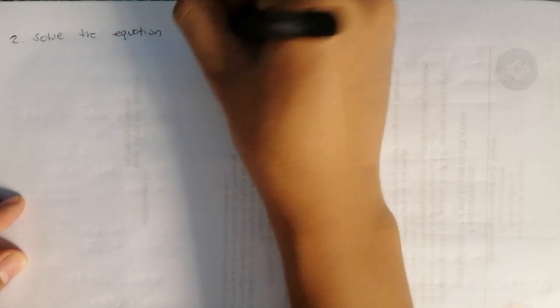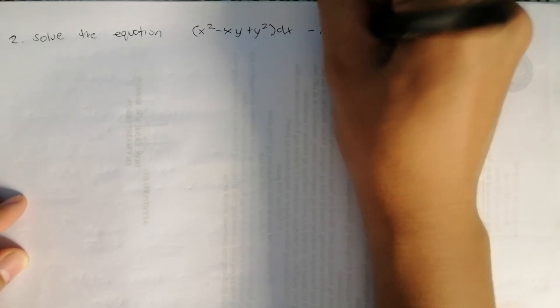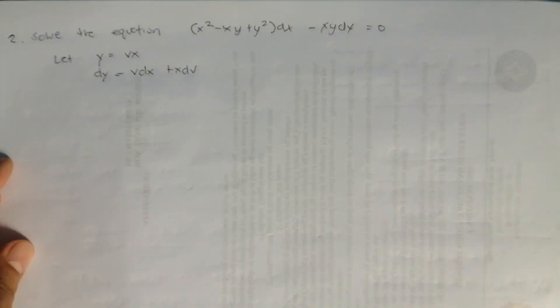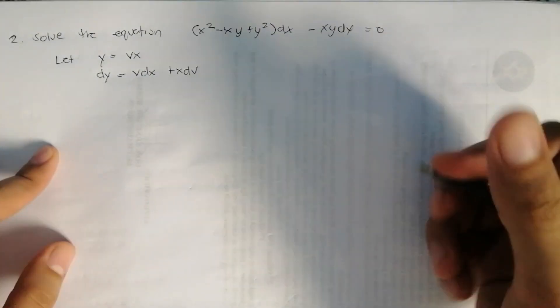For number 2, solve the equation: (x² minus xy plus y²) dx minus xy dy equals 0. Let y equals vx, so the derivative of y is v dx plus x dv.